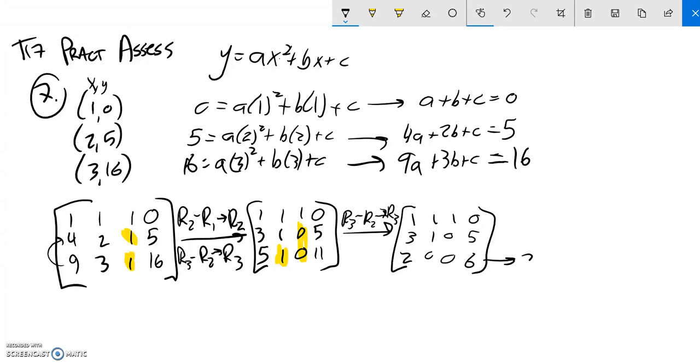I know my a value. 2a is 6. So a must be 3. And if a is 3, I can plug it into this equation and get b. So 3 times a plus 1b equals 5. So 6 plus b is 5. So b must be negative.